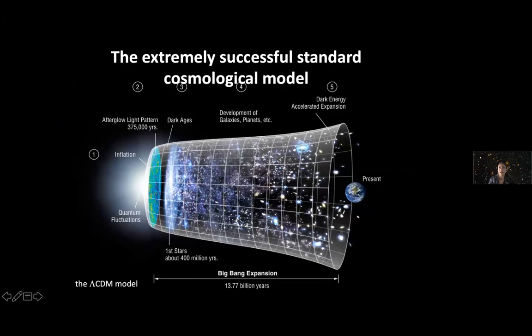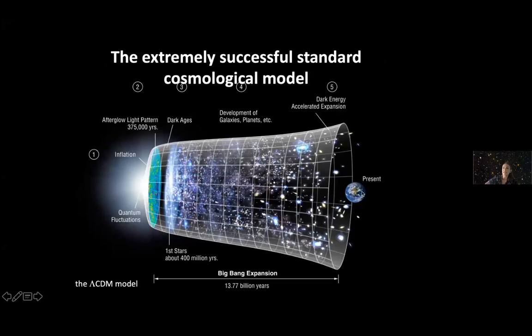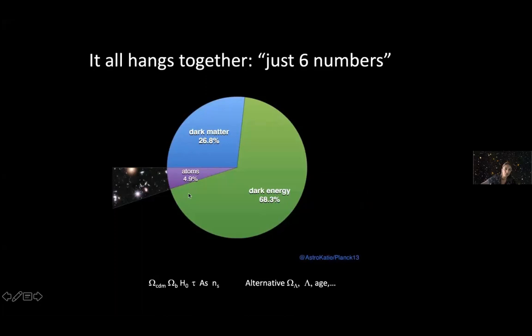We are all familiar with the extremely successful standard cosmological model, which is the famous or infamous Lambda-CDM model. We are here looking at the universe back, far away and back into the past until we see the earliest light that we can see, the surface of last scattering, also called the cosmic microwave background.